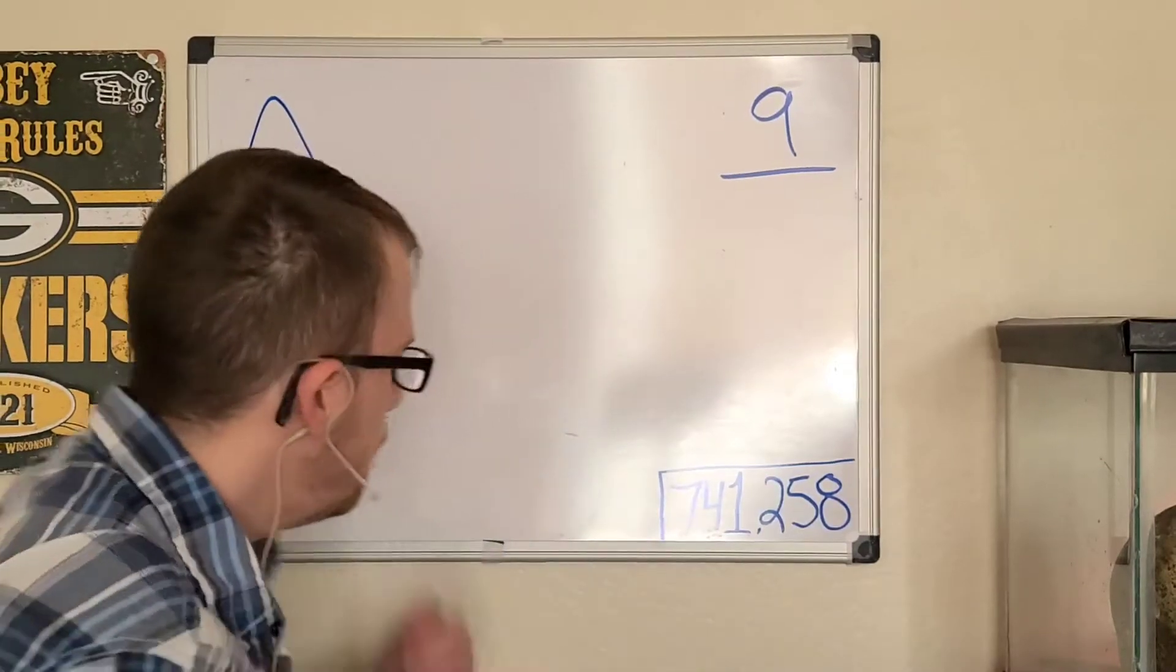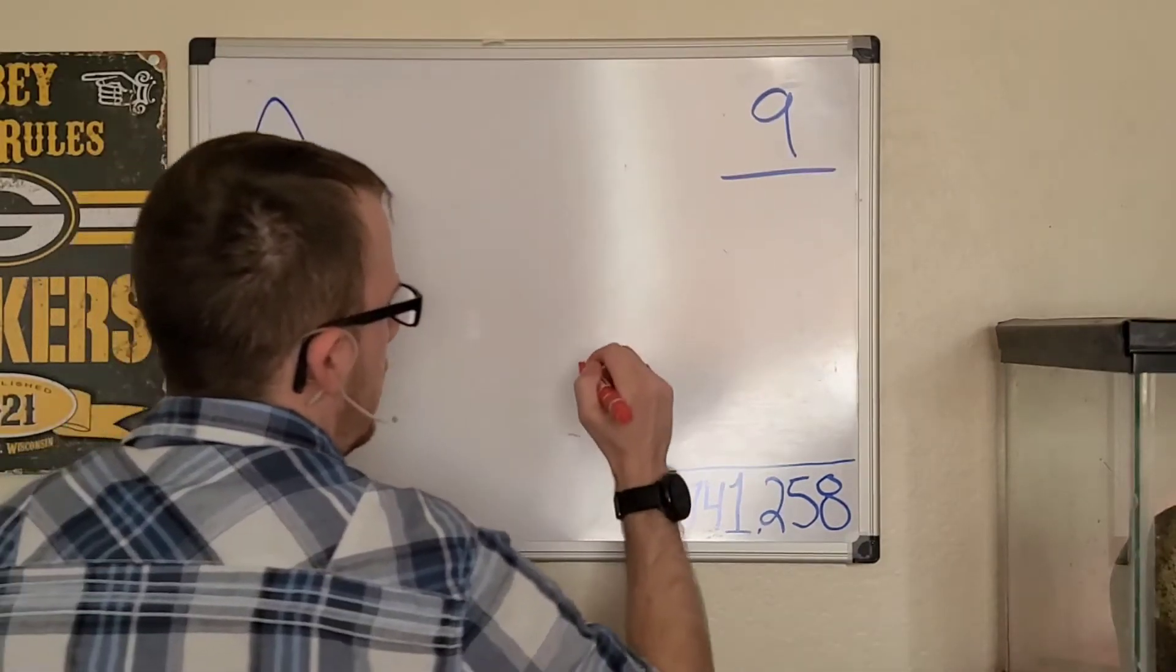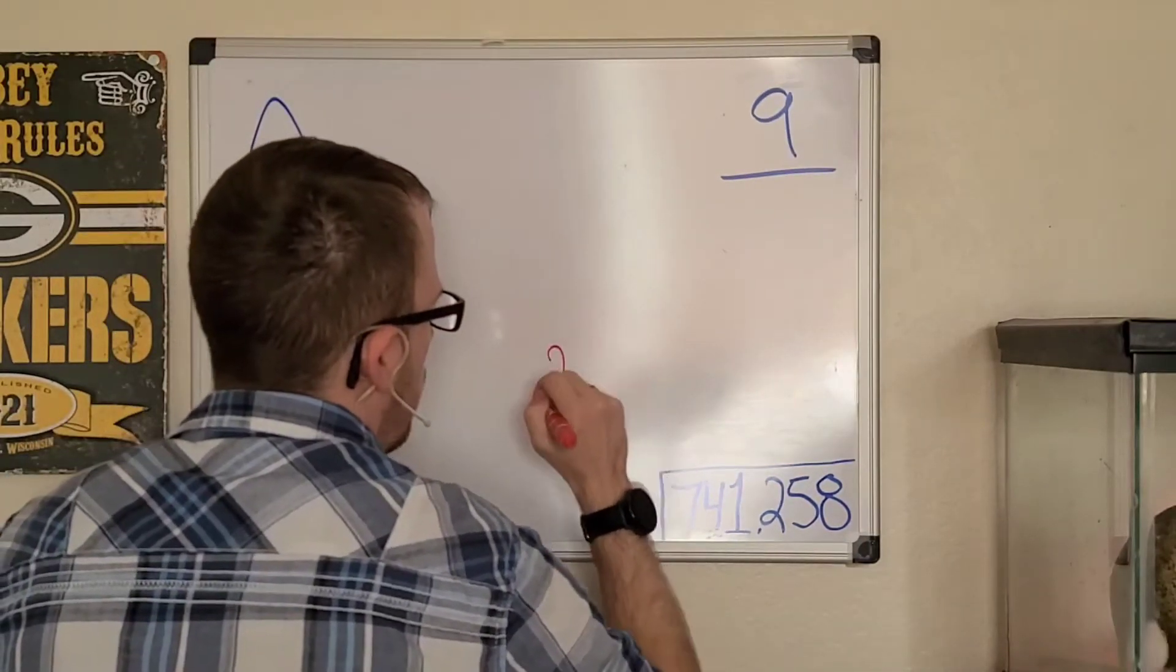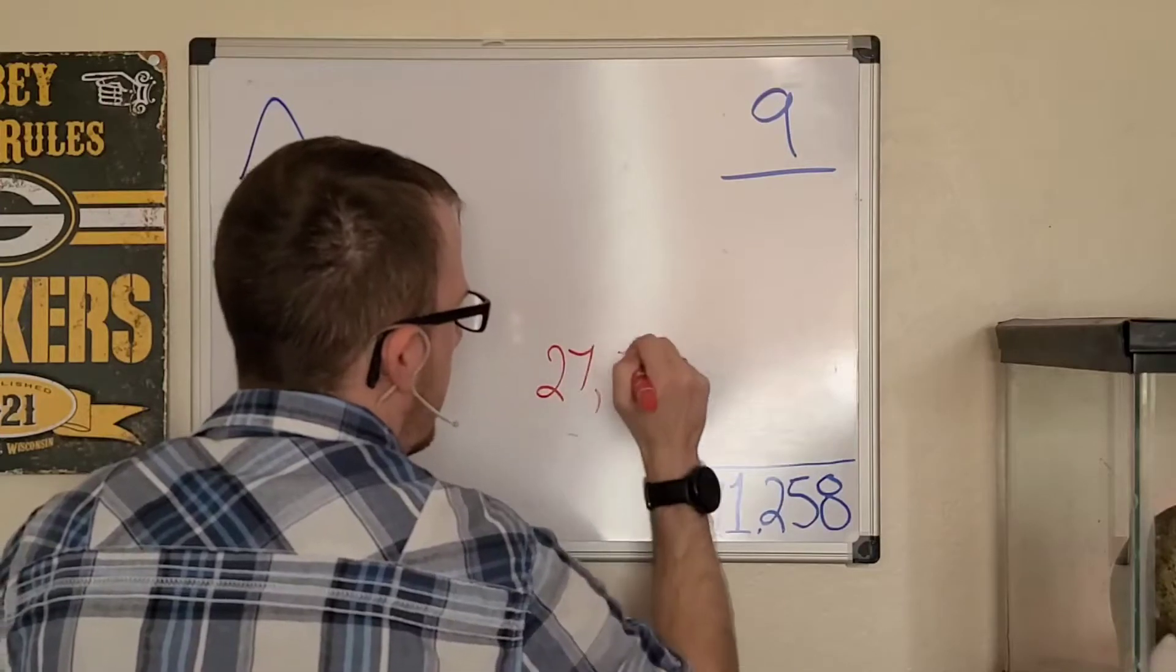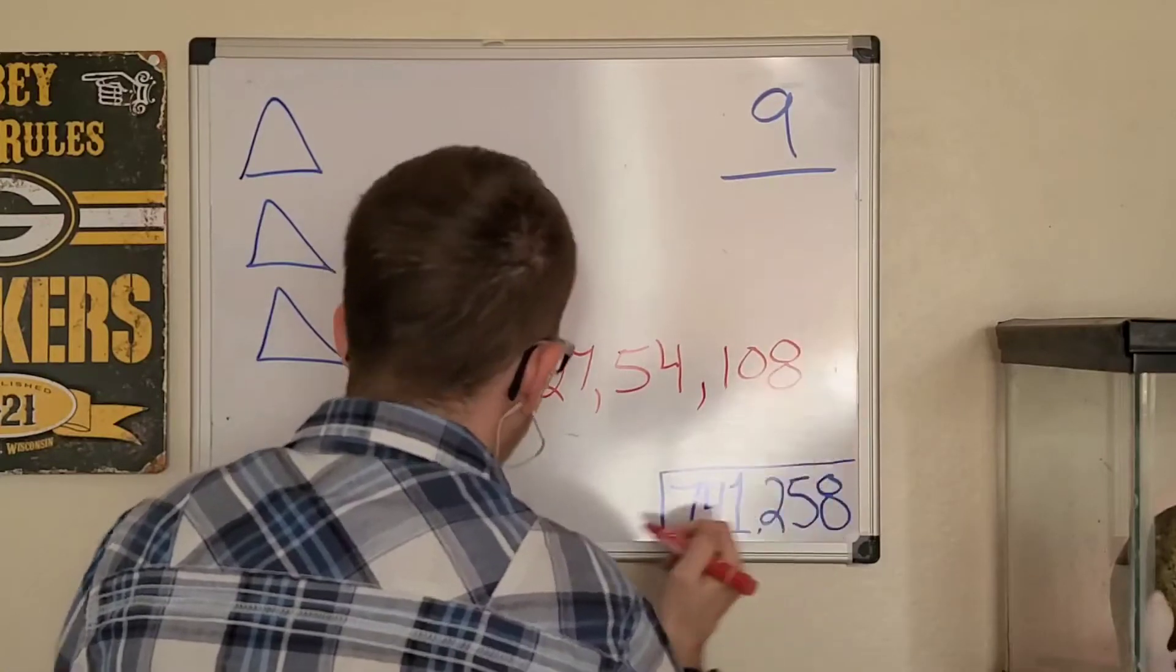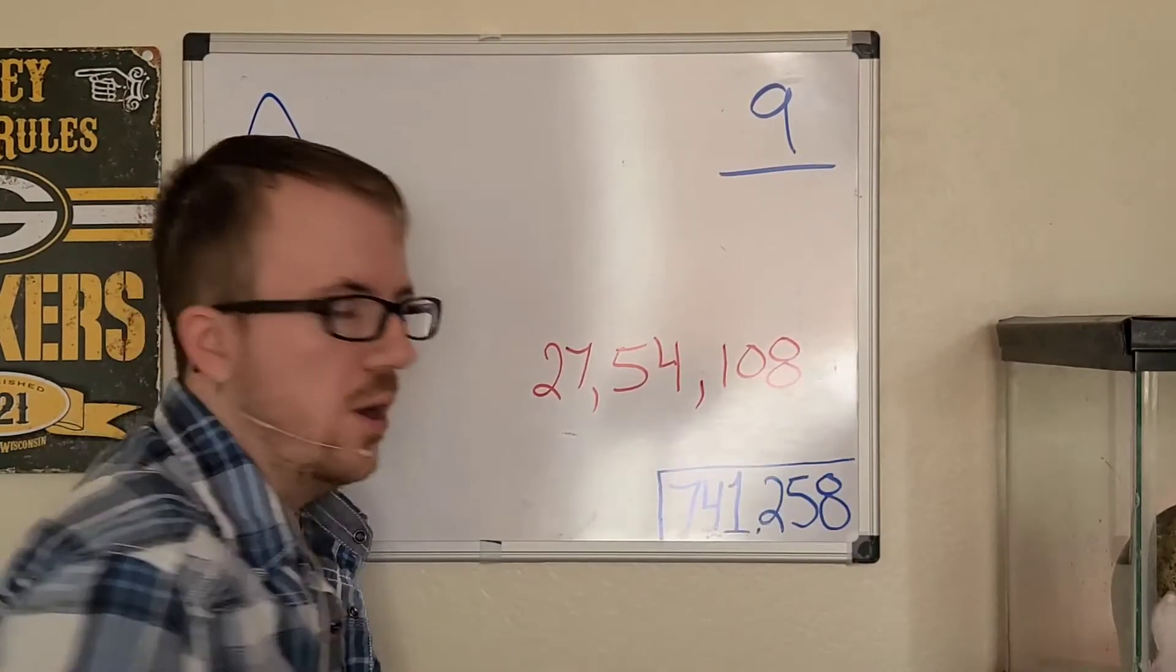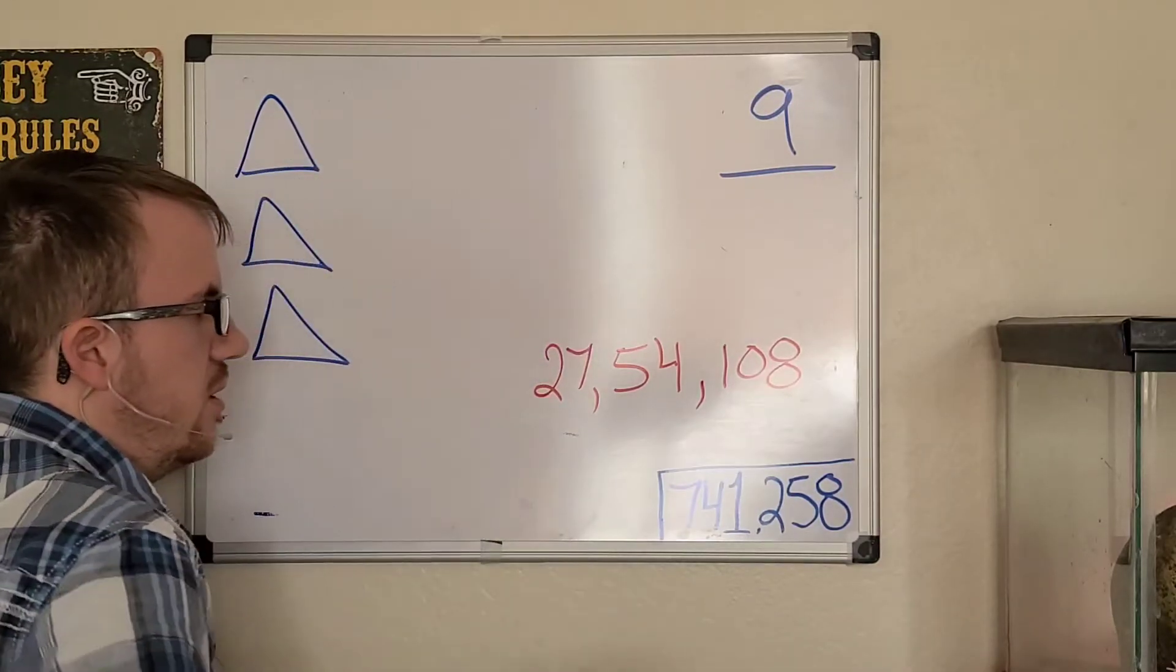On top of that, there are also three spiritual numbers. They are 27 which is a nine, 54 which is a nine, and 108. If you want to know more about these numbers, go ahead and research them - 27, 54, and 108. But for this I'm going to go quick.